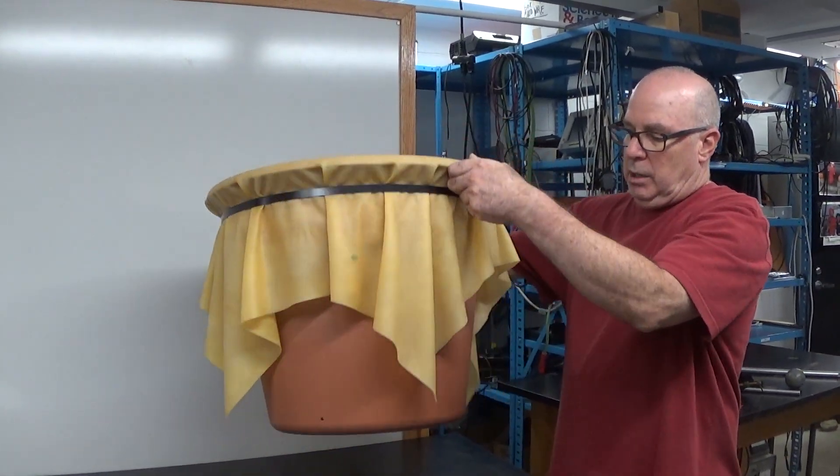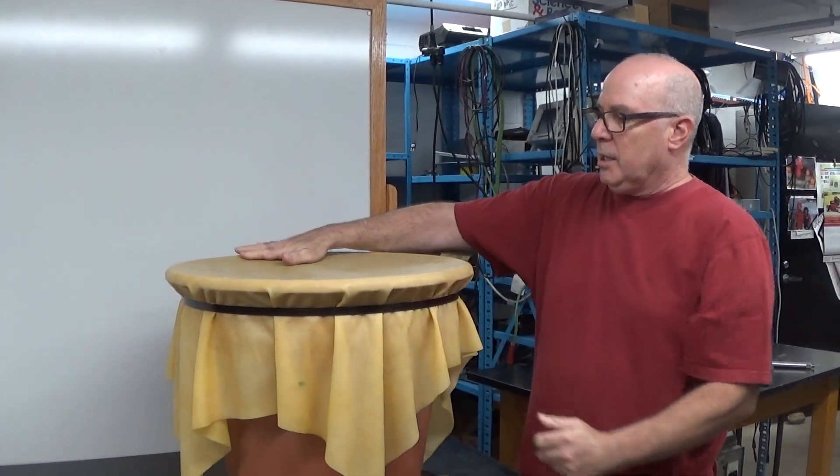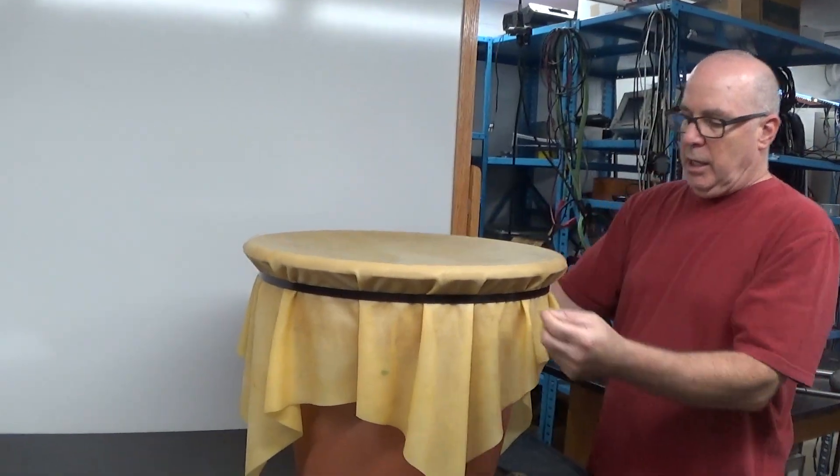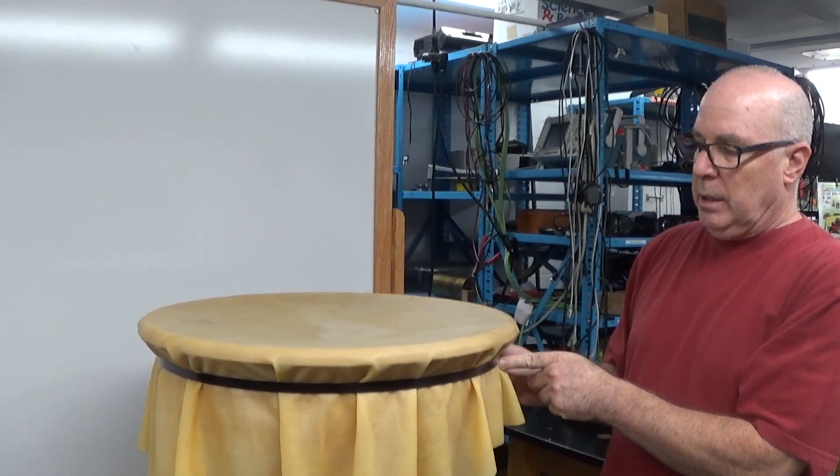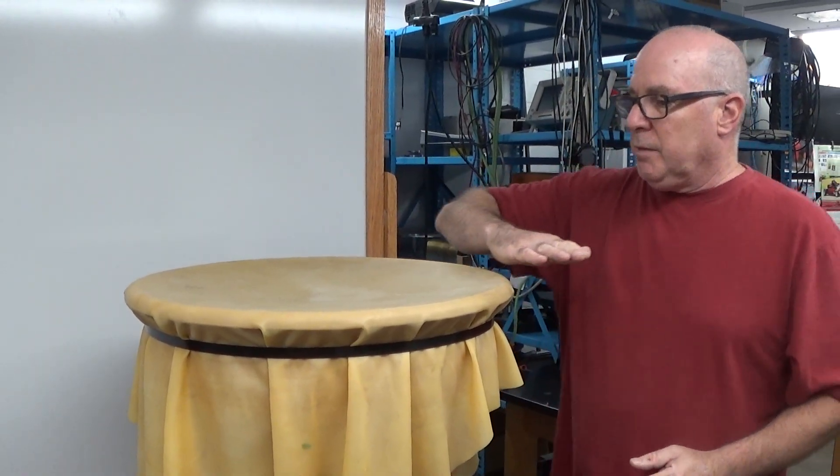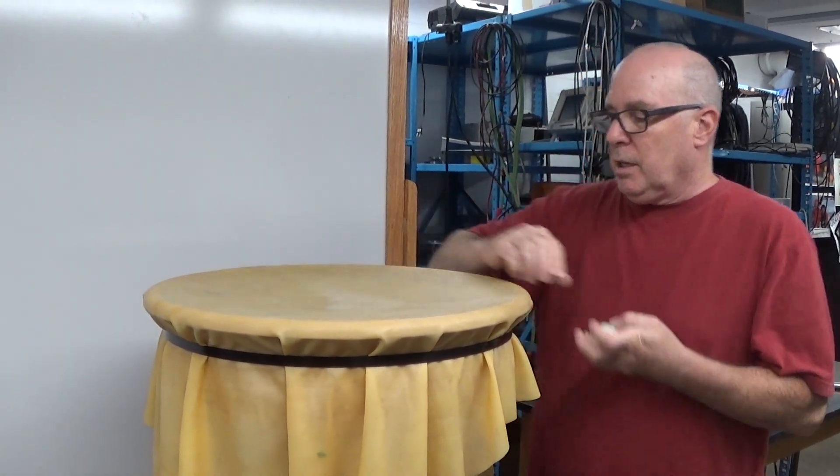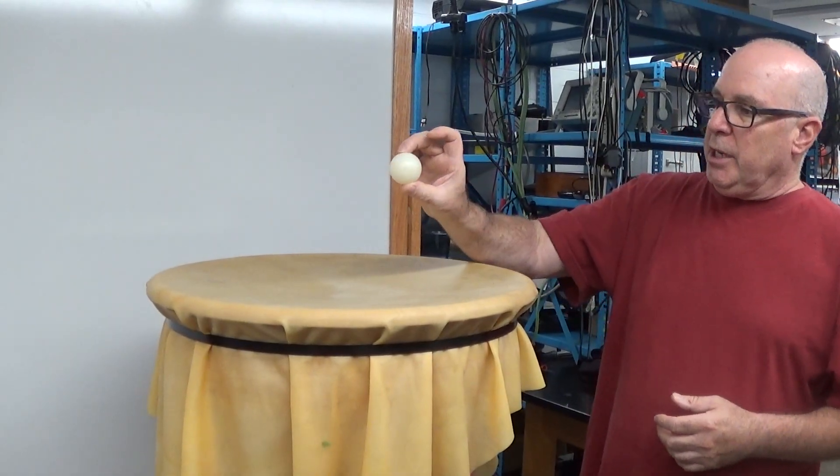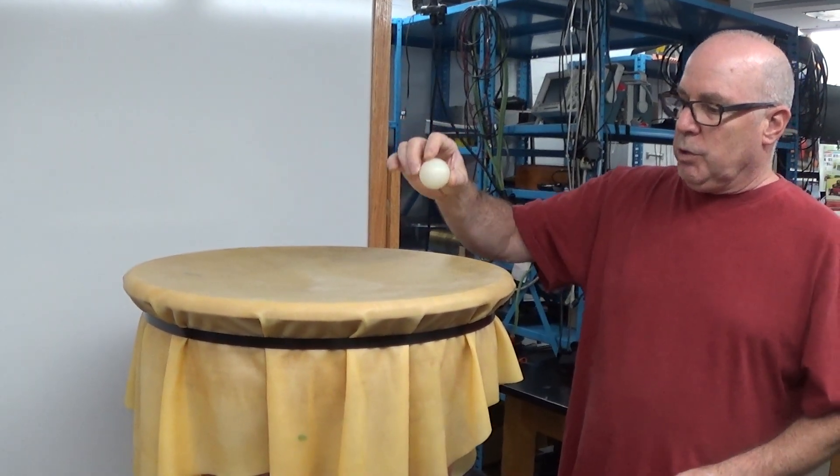I have my gravitational well here. It's a bucket with a latex sheet held by a strap. This represents space-time, and if space-time is flat, then light, which is represented by this ball, represents a photon of light.